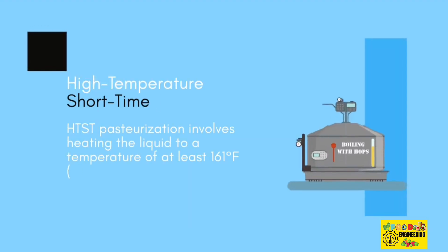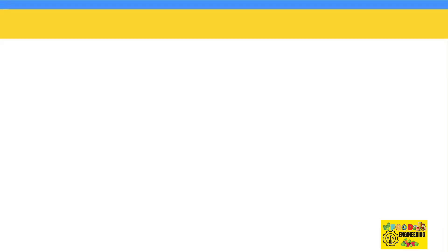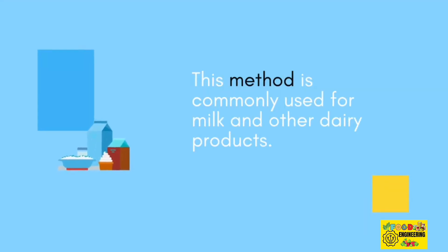High Temperature Short Time (HTST). HTST pasteurization involves heating the liquid to a temperature of at least 161 degrees Fahrenheit (71.7 degrees Celsius) for 15 seconds. The liquid is then cooled rapidly to prevent any further microbial growth. This method is commonly used for milk and other dairy products.